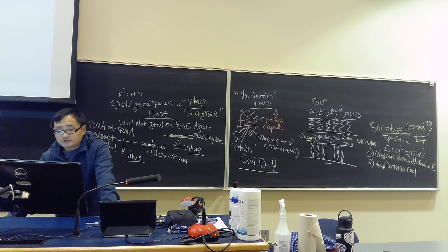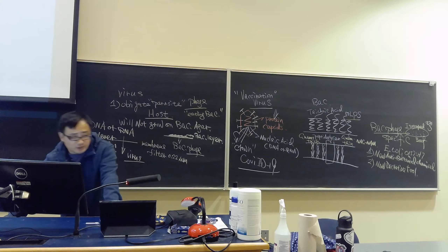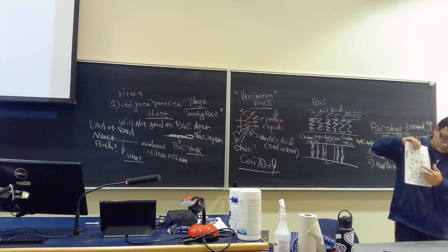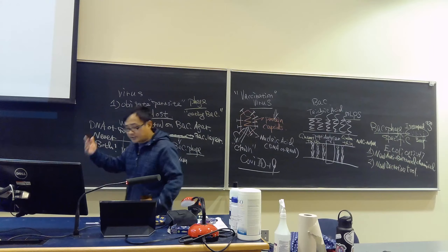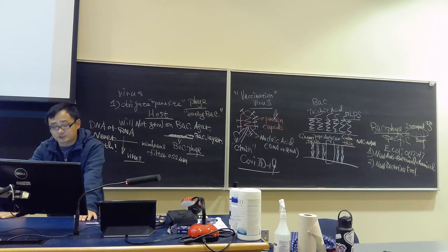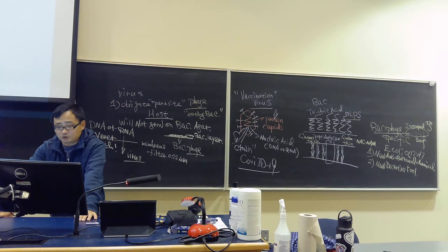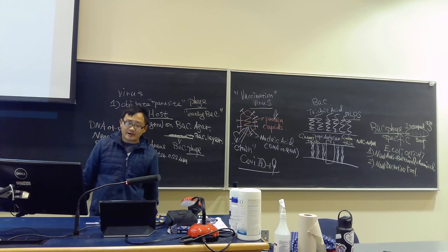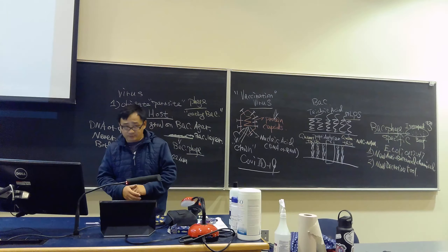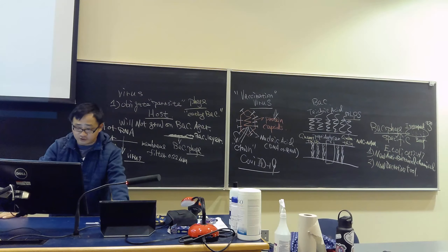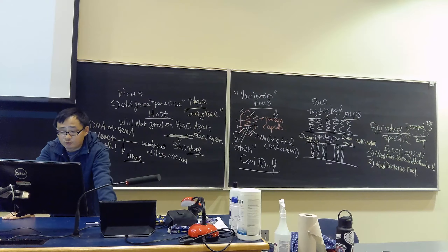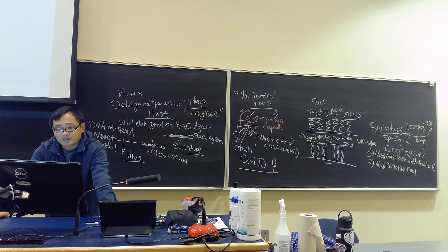HIV virus infects all cells displaying CD4 — clustered differentiation 4. We've talked about dendritic cells and the major histocompatibility complex; you can see very clearly that is the area attacked by HIV virus. That's why you lose the function of recognizing foreign antigens, and that's why HIV patients are called immune deficiency patients. Some viruses infect many different species — like rabies, which can infect skunks, dogs, humans, and bats. If you are bitten by any wild animal, you must go see a doctor immediately and get the rabies vaccination.